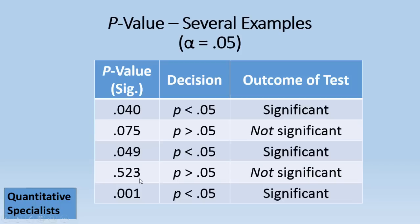And then .523, that's definitely greater than .05, so it's not significant. And then finally .001, definitely less than .05, so this result is significant.